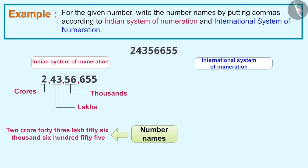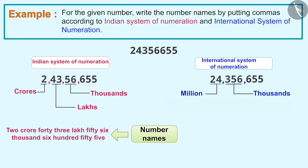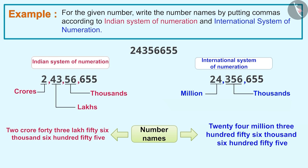According to the International System of Numeration, commas are used after three digits from right to mark thousands, then after three digits to mark millions. So according to this system, the number name will be written as 24,356,655.